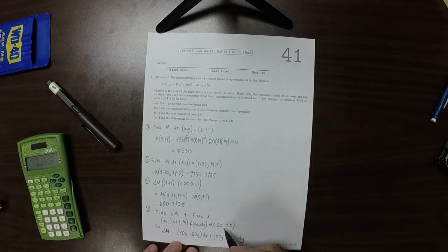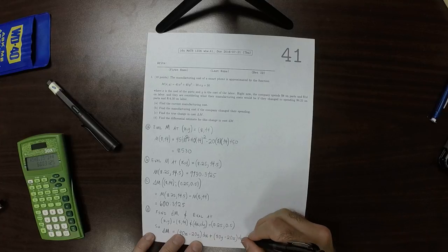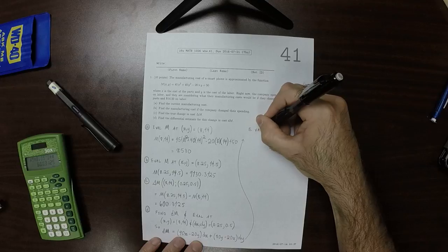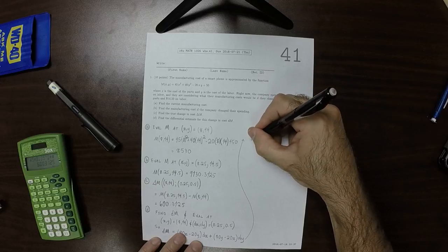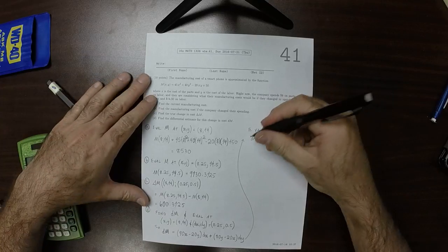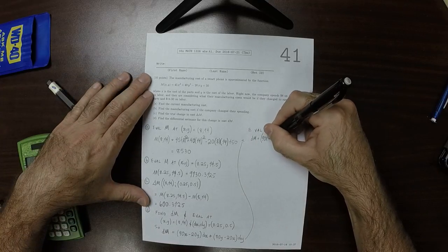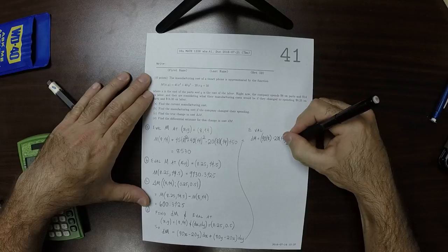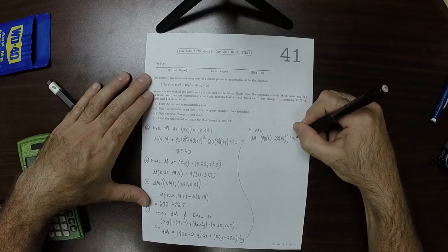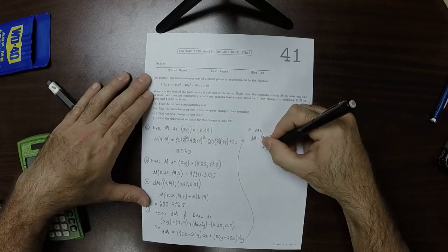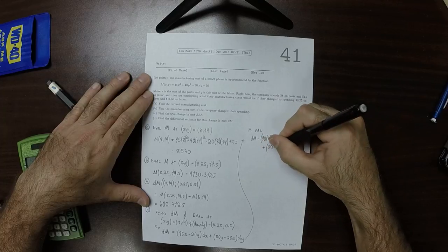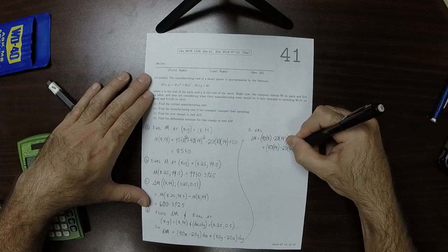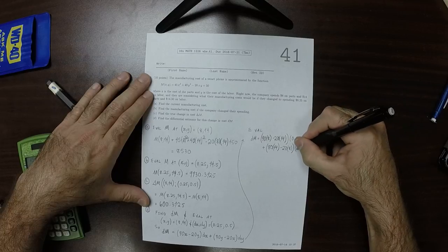And now we want to evaluate at that point. So we're going to evaluate. DM would be 90 times 8 minus 20 times 14, and then dx is 0.25. And then plus 80 times 14 minus 20 times 8, and then multiplied by 0.5.